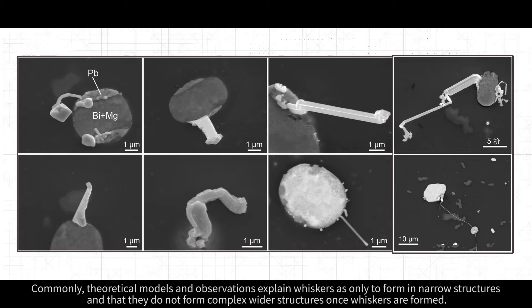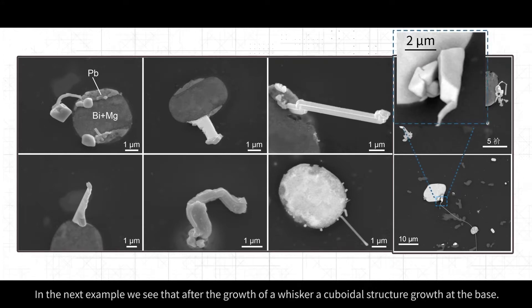Commonly, theoretical models and observations explain whiskers as only to form in narrow structures and that they do not form complex wider structures once whiskers are formed. In the next example, we see that after the growth of a whisker, a cuboidal structure grows at the base.